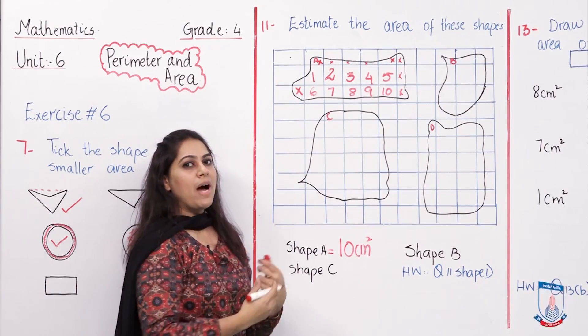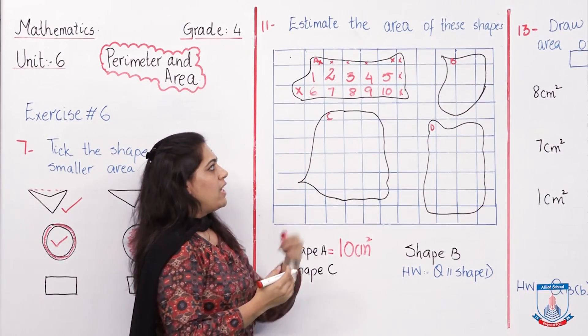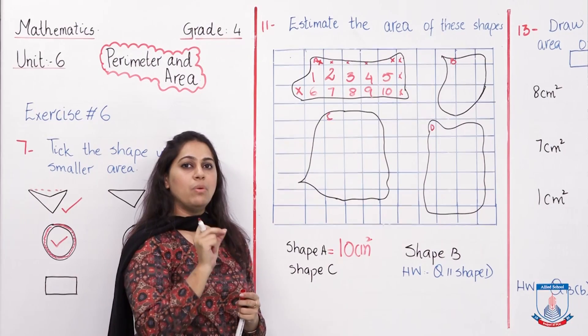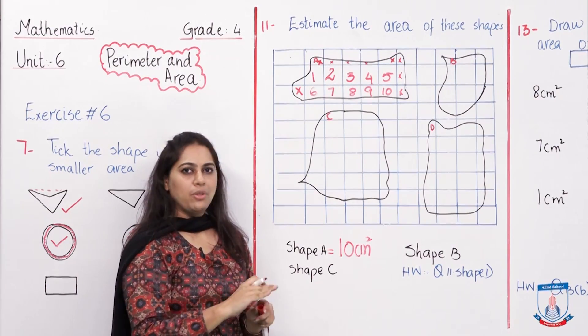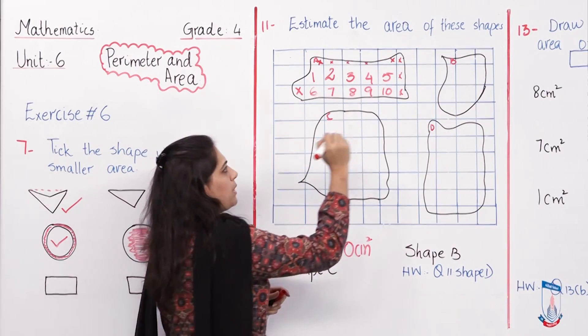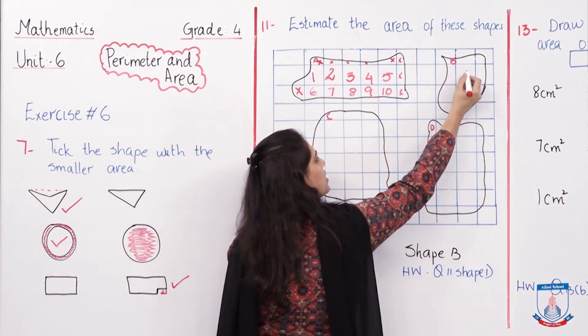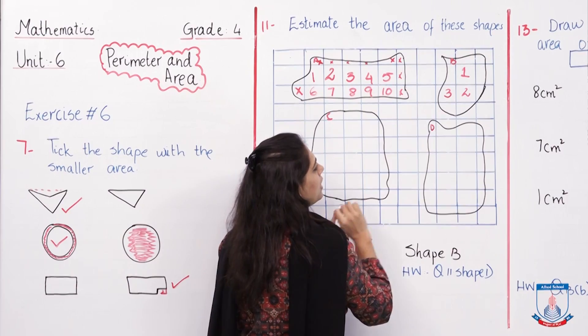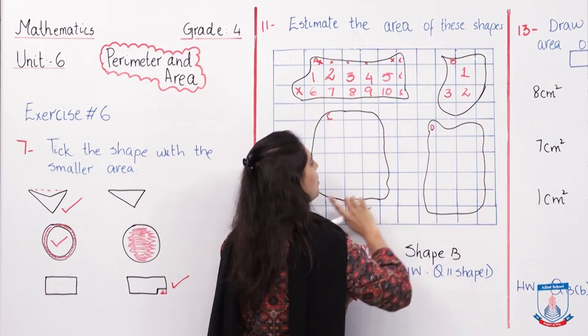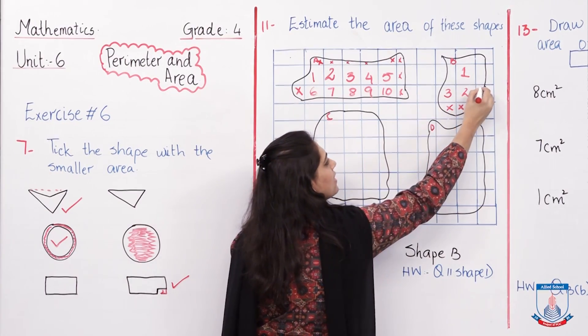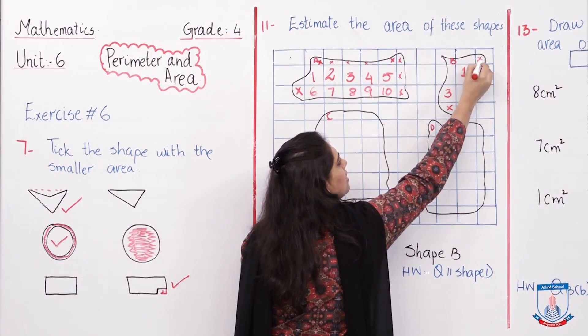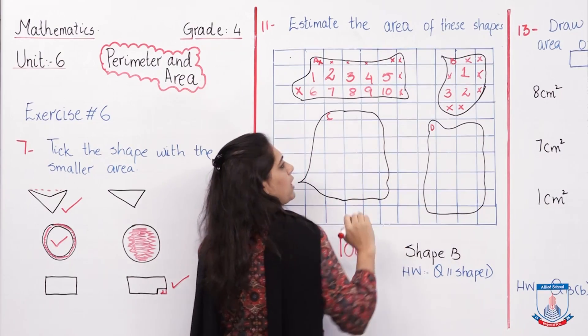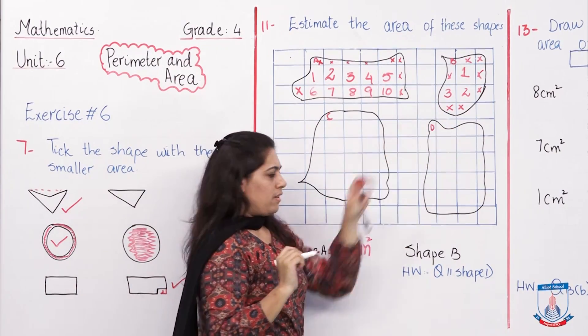Let's move toward shape B. In estimation, if the shape completely covers the box, we are going to count it. If the box is not completely covered or is less than half, we are not going to count it and will mark a cross. For B, the complete covered boxes are one, two. This is more than half covered. This is half covered, I am not going to count it. I'll put a cross. This is also a cross, and this, and this. What is the area of this shape?